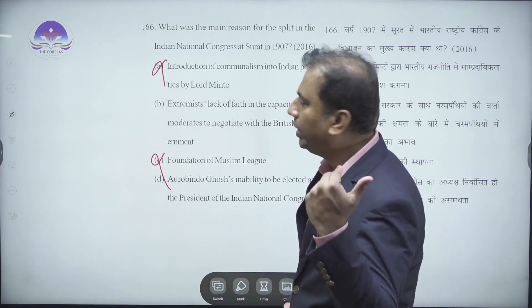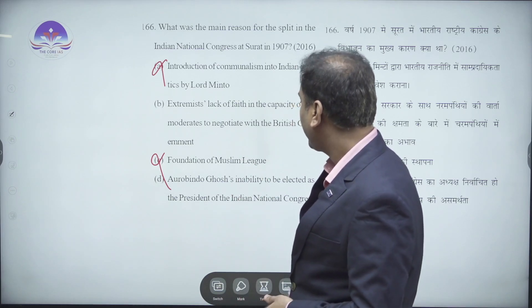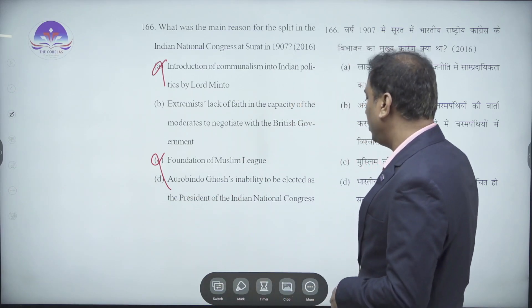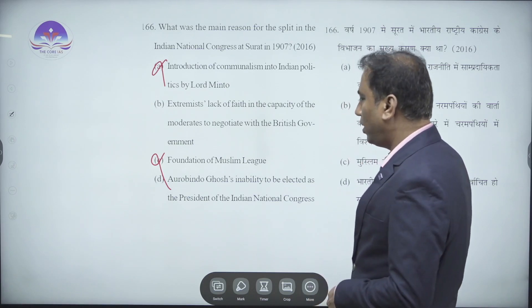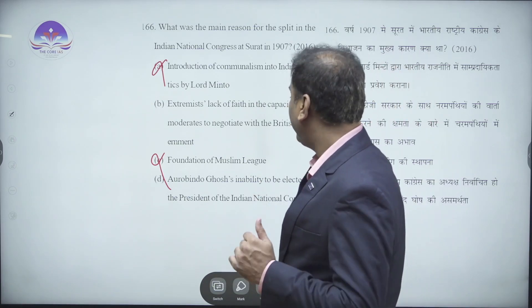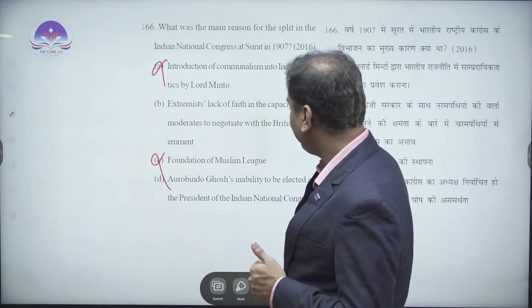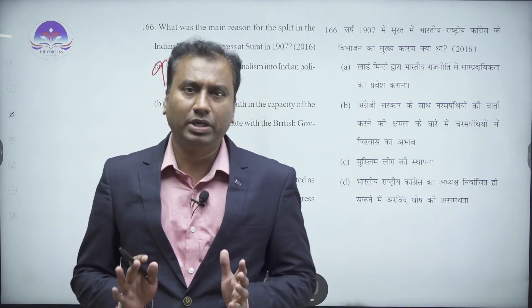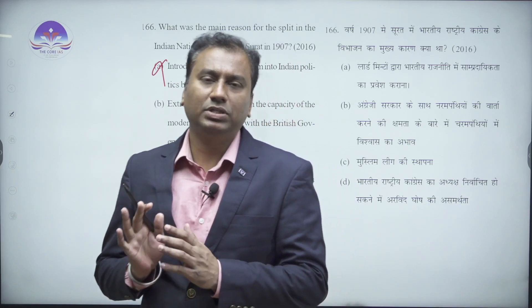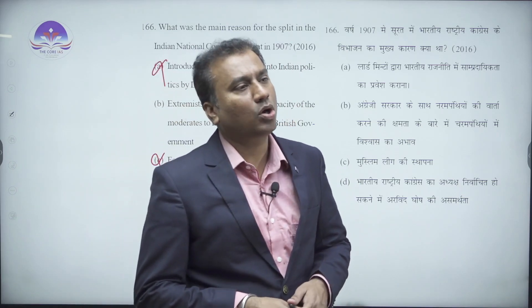Option D states that Aurobindo Ghosh was unable to be elected as President of the Indian National Congress. While there may have been some tension within Congress over who would become president, this is a minor issue - not significant enough to cause the entire Congress to split.